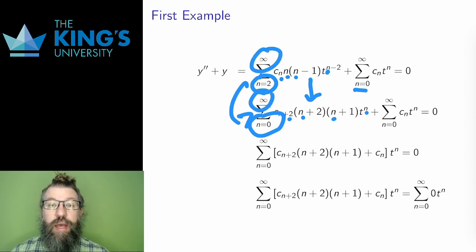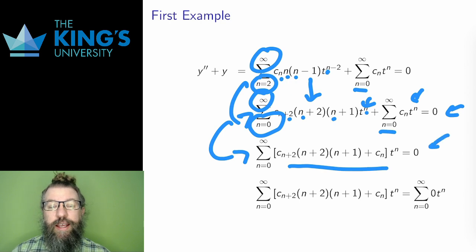Well then I have two series with the same bounds, and the same powers of t. I can combine them. Finally, I have 0 on the other side of the equation. I can do something a bit silly. I can write 0 as a series. As a series, it's just 0 times every power of t, since that all adds up to 0.